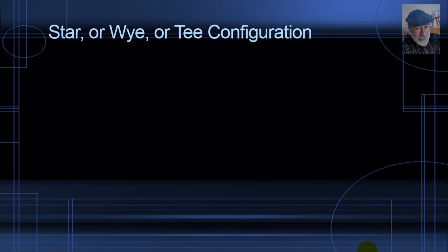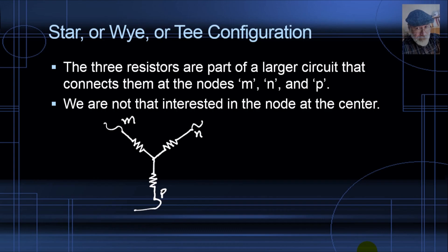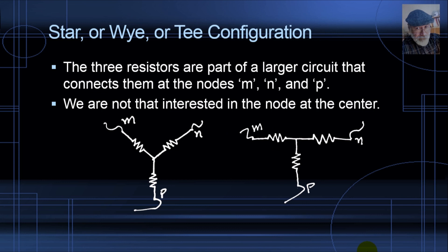Another configuration is what we call a star, a Y, or a T configuration — three resistors, inductors, capacitors, or sources connected like this. In this configuration, we are not that interested in what is happening at the node in the center, but we do care about nodes M, N, and P. It looks like the letter Y. Some say it looks like a star — and sure, it is a star. Others say if you stretch the two resistors at the top, it looks like the letter T. So call it a star, a Y, or a T.